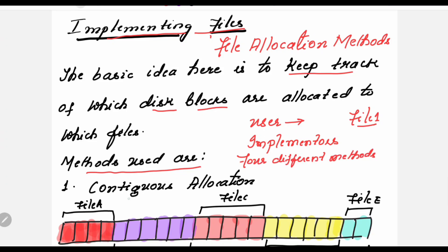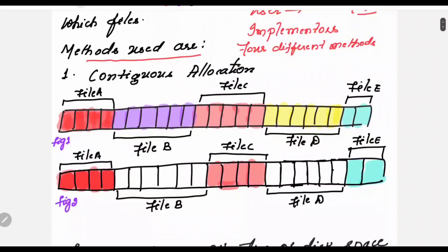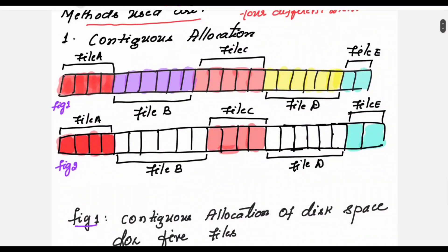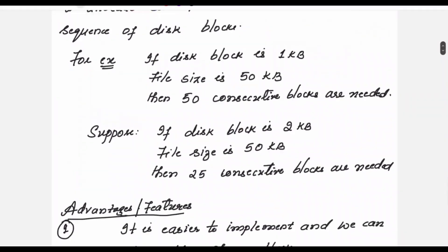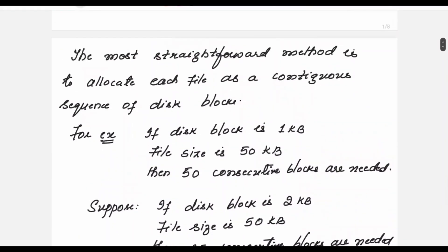The first one is called contiguous allocation. This method will allocate each file as a contiguous sequence of disk blocks.